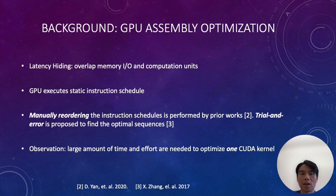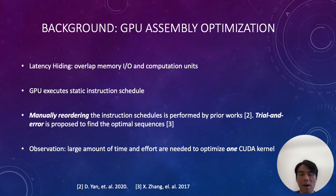Note that the GPU executes instructions according to their static schedules. This means the compiler-generated instruction schedule is the actual execution sequence, and there is no out-of-order execution. Thus, the manual schedule is the actual sequence issued to the hardware. As a result, trial and error is employed by ML practitioners to find the optimal sequences, as shown by prior work.